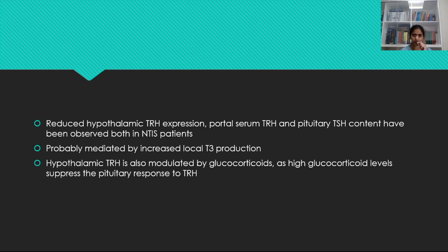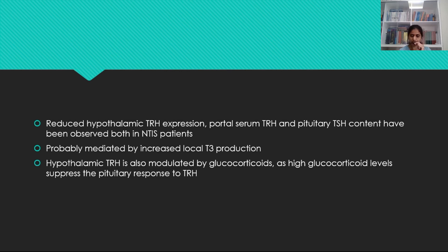Reduced hypothalamic TRH expression and portal serum TRH and pituitary TSH content have been observed in non-thyroid illness patients. Basically there will be an alteration of the hypothalamic-pituitary-thyroid axis. TRH (thyroid releasing hormone) expression will be decreased, resulting in decreased TSH production from the pituitary. Some say this is mediated by decreased availability of local T3, which in turn is caused by increased type 2 deiodinase enzyme. Another etiology behind decreased TRH expression is glucocorticoids — high steroid levels suppress pituitary response to TRH.